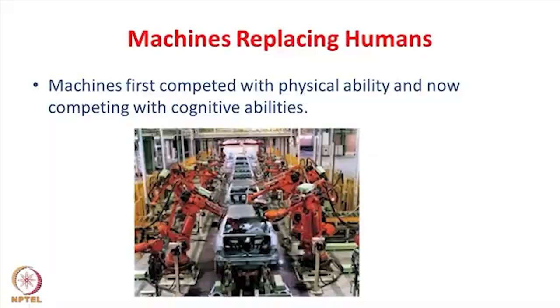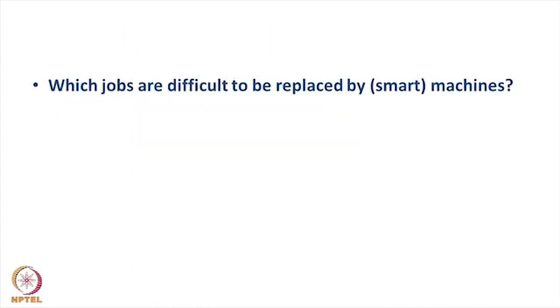If we look at how the change process has happened in the last 200 years: in the first part of industrialization, machines were competing with the physical ability of human beings. But now they are shifting — they are replacing the cognitive capability of human beings. Can you think of some jobs which are difficult to be replaced by machines at this moment?